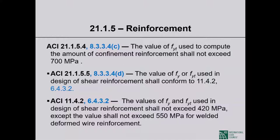The yield strength of transverse reinforcement used for confinement purposes shall not exceed 100 ksi, so up to 100 ksi is allowed for confinement. However, when transverse reinforcement serves as shear reinforcement, you cannot use a yield strength higher than 60 ksi in computations — allowing higher values would result in wide shear cracks, which are very objectionable. For confinement purposes only, up to 100 ksi is permitted.